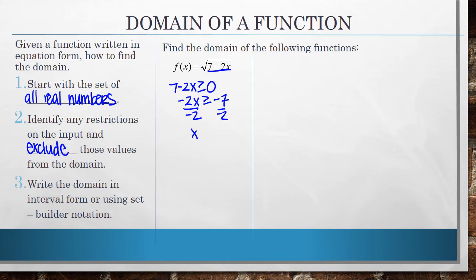And I'm left with negative 2x is greater than or equal to negative 7. And now to get the x by itself, divide both sides by negative 2. Remember, when you divide by a negative, you have to flip the inequality sign. So I get that x has to be less than or equal to 7 halves to make this a valid function.